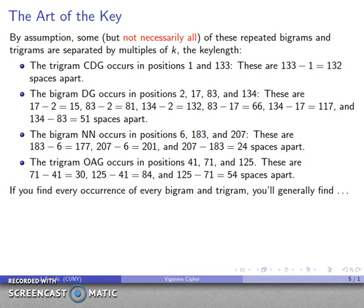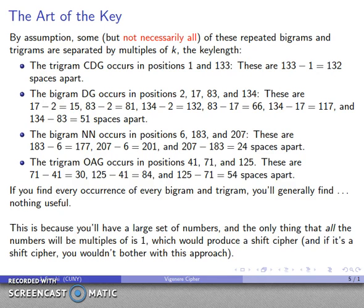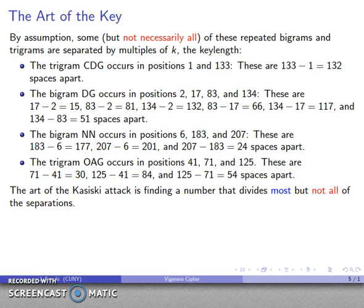If I find every occurrence of every bigram and trigram, I generally find nothing useful. The problem is that I end up with so many numbers that I don't find any single number that these are all multiples of. The art of the approach is that we want to select some but not all of these separations as presenting multiples of the key length. The observation here is that most of these numbers are divisible by 6, not all of them, but most of them are divisible by 6. That strongly suggests that the key length is, in fact, going to be equal to 6.